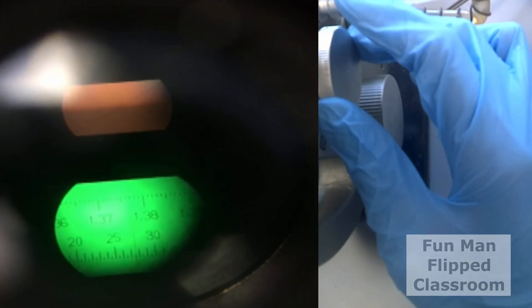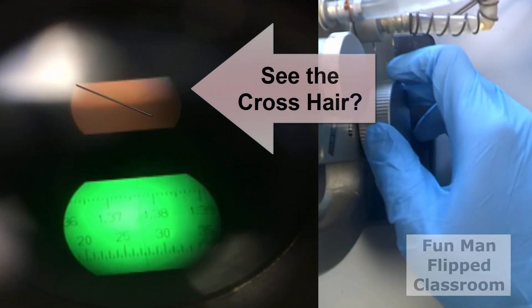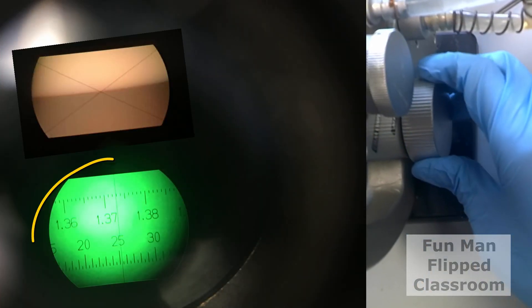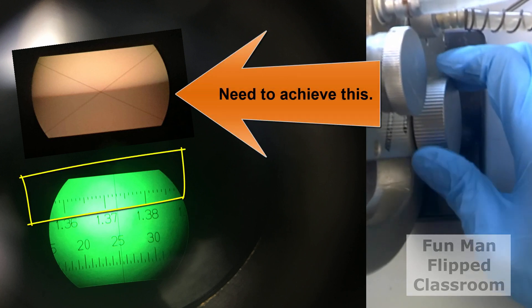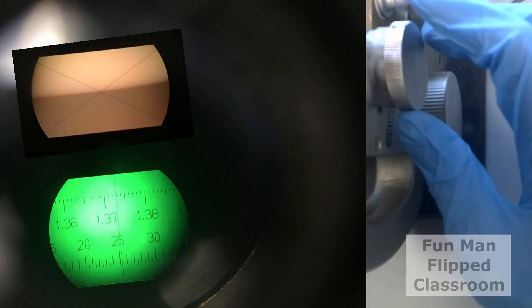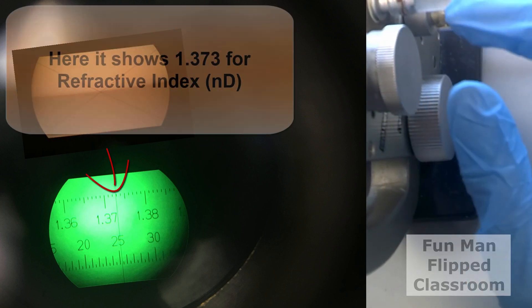At this point, turn the measurement knob to set the boundary line to the intersection of the crosshairs. For the lower scale view, this is where you can record the refractive index reading. The upper scale is for reading refractive index, while the lower scale is for the bricks percent. Read off the scale and take down the reading you need. That's it.